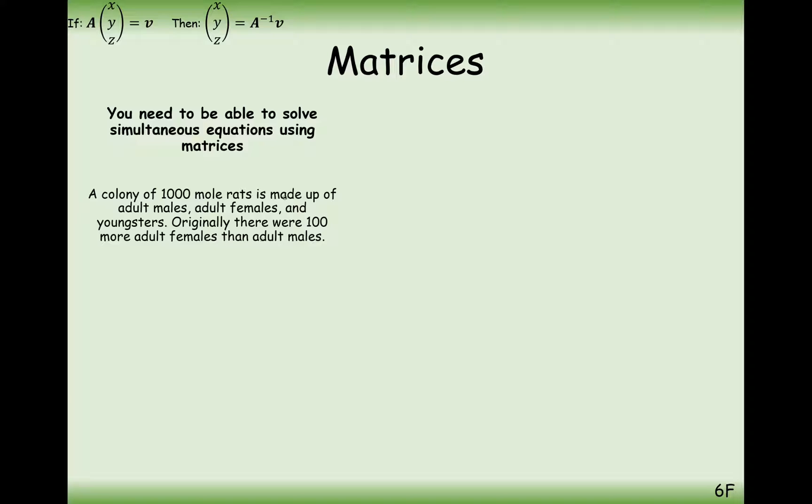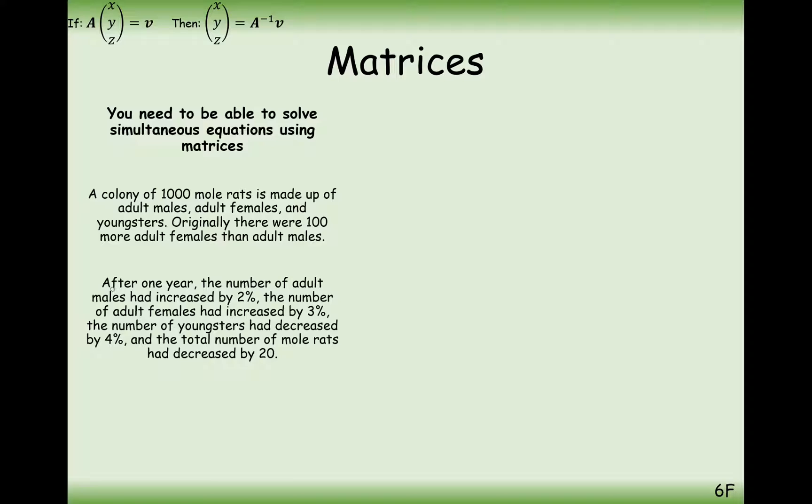Something else that we can do is we can answer questions that involve a contextualized problem, form the three equations, and do exactly what we've done before. In this question here, a colony of 1,000 mole rats is made up of adult males, females, and youngsters. Originally, there were 100 more adult females than adult males. The question here is really find out how much of each type of mole rats there were originally in the colony.